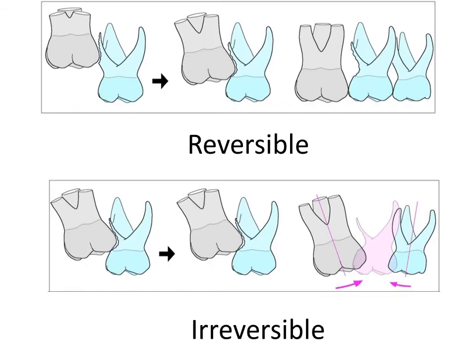Here is a figure that demonstrates the difference between the reversible and irreversible types. In the reversible type, we will see the spontaneous correction of the pathway of eruption of the sixth.